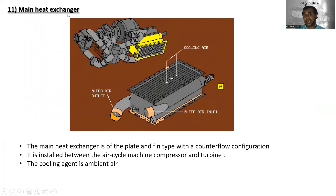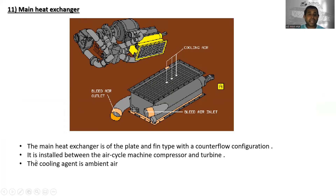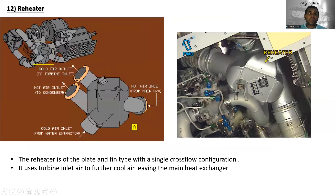The main heat exchanger — you can see the cooling air, bleed air outlet, and bleed air inlet. The main heat exchanger is of the plate and fin type with the outer flow counter-flow configuration. It is installed between the air cycle machine compressor and turbine. The cooling agent is also ambient ram air.